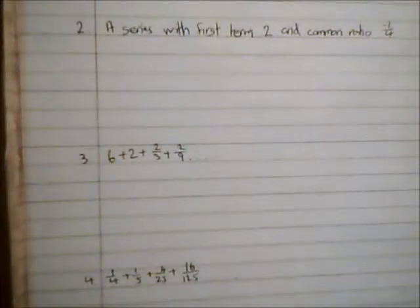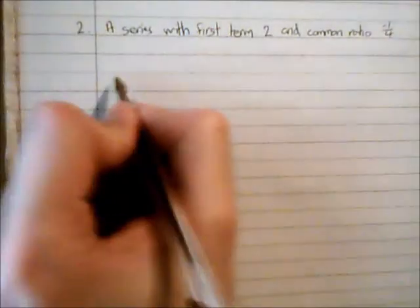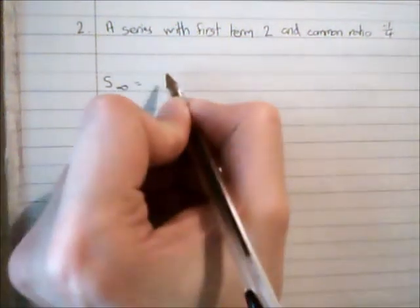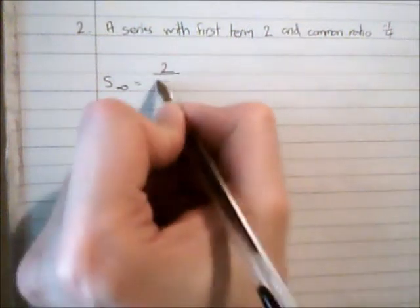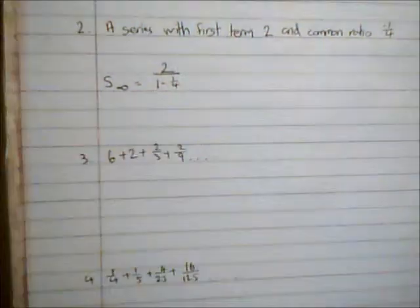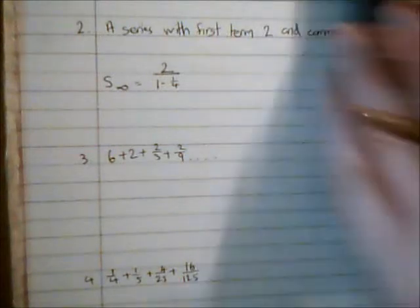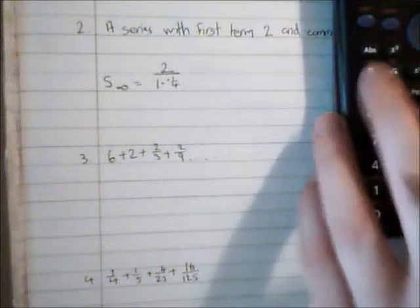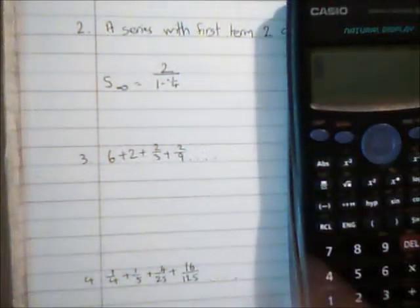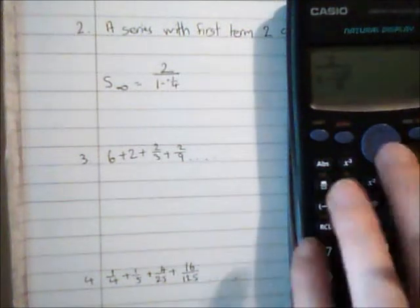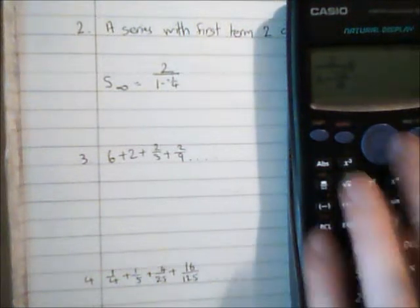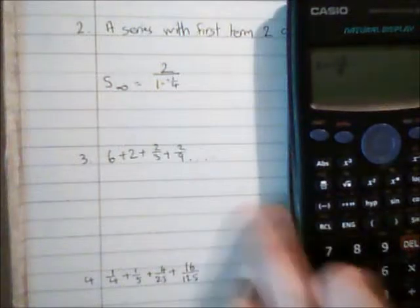Question 2, exactly the same approach again. We've got the sum to infinity here is equal to a being 2 over 1 minus r, so 1 minus negative a quarter. I can evaluate that: 2 over 1 subtract negative a quarter, and that gives me 3 fifths.